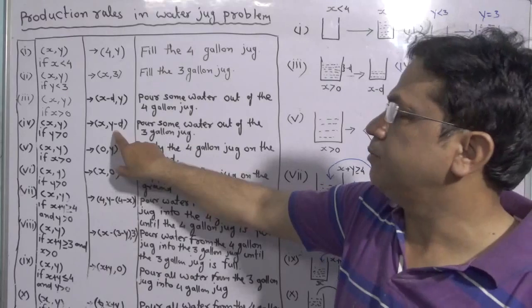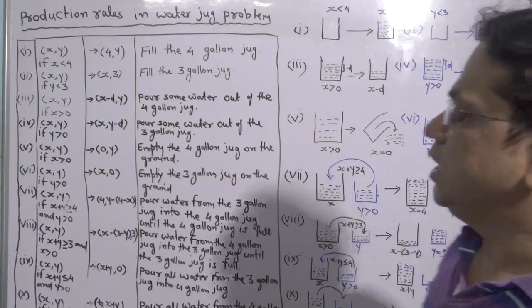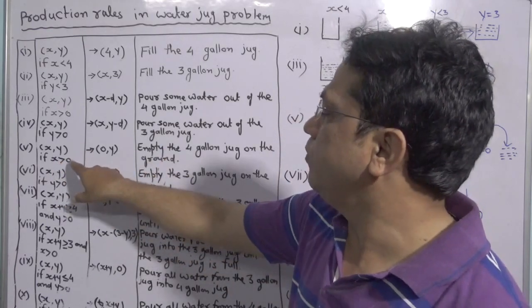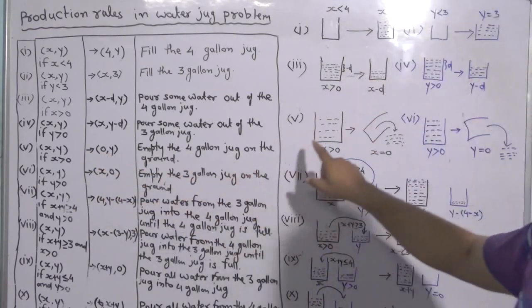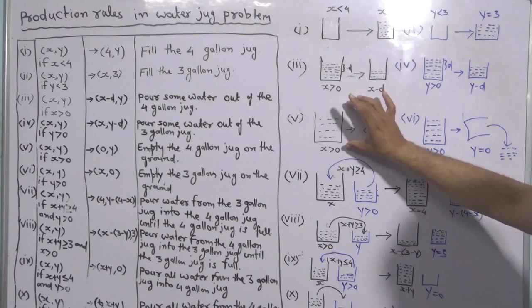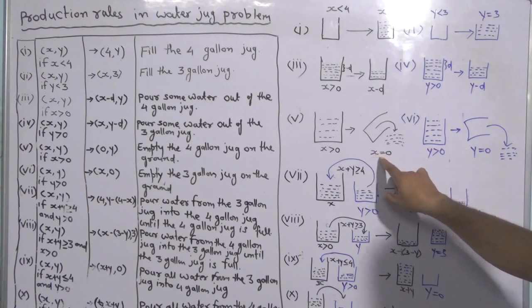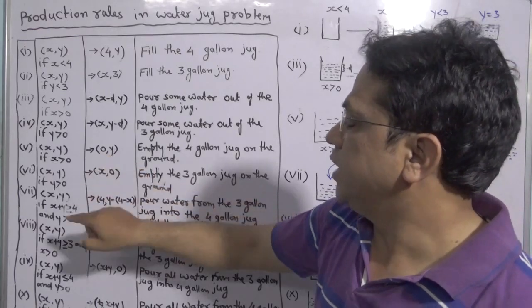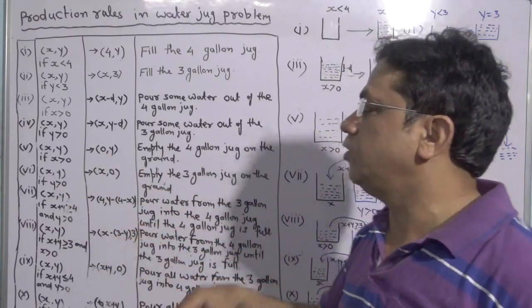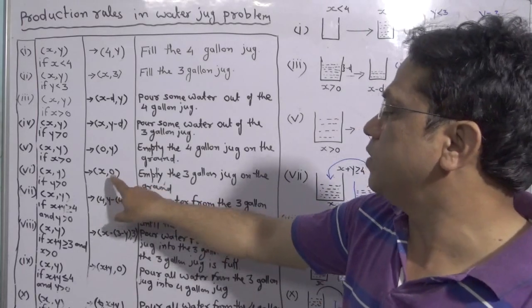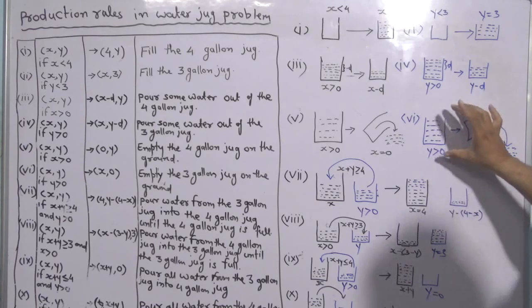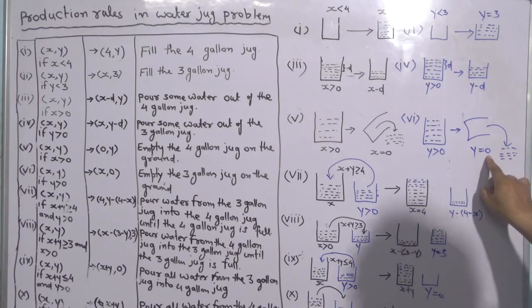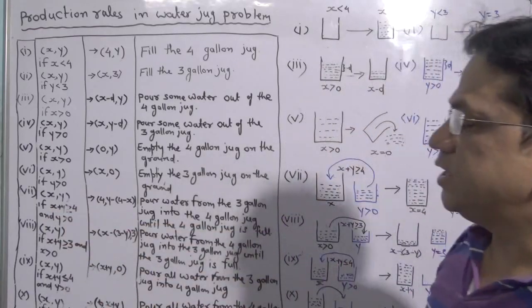In rule 5, if X is having water more than 0 and we want to make it zero, we write the state as (0, Y). That is shown in the fifth diagram: the jug is having some water and if we take it out completely, X becomes zero. Similarly in rule 6, if Y is having some water and we want to make it completely empty, we write the state as (X, 0), and Y becomes zero.